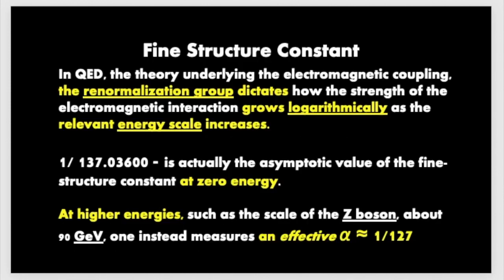In conclusion, the fine structure constant in QED is the theory underlying the electromagnetic coupling. The renormalization group dictates how the strength of the electromagnetic interaction grows logarithmically as the relevant energy scale increases. So the 1 over 137 is actually the asymptotic value of the fine structure constant at zero energy. At higher energies, such as the scale of the Z boson, one instead measures an effective alpha of 1 over 127.